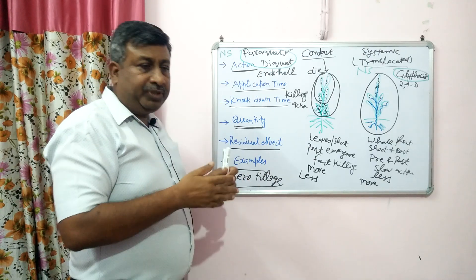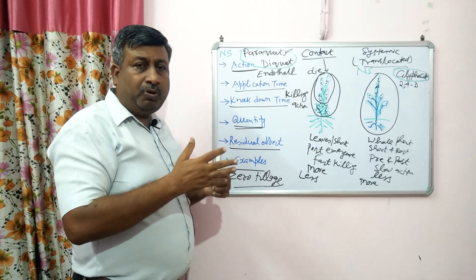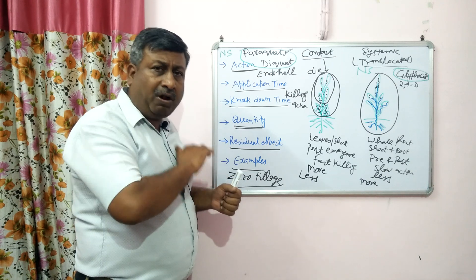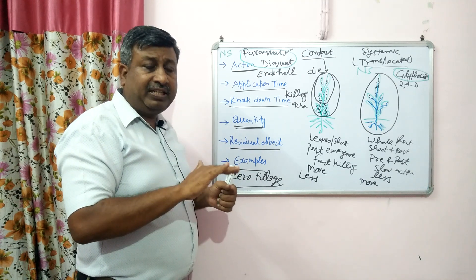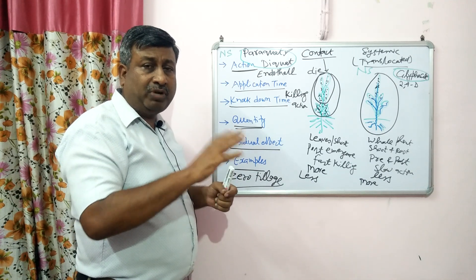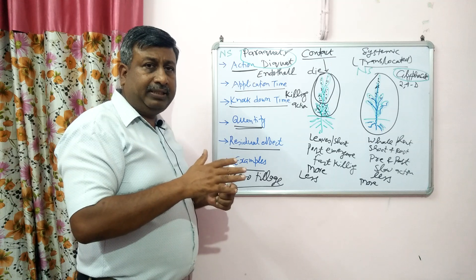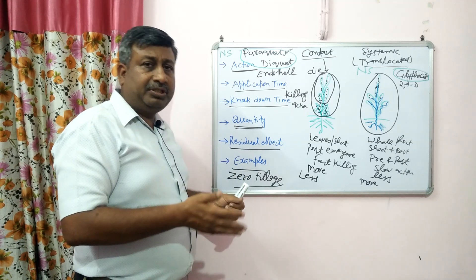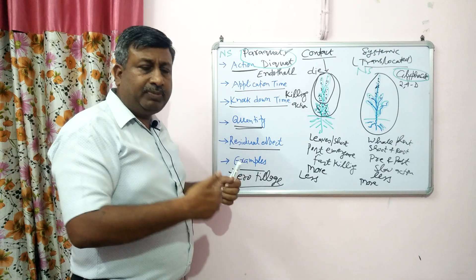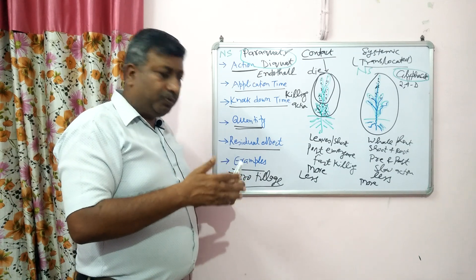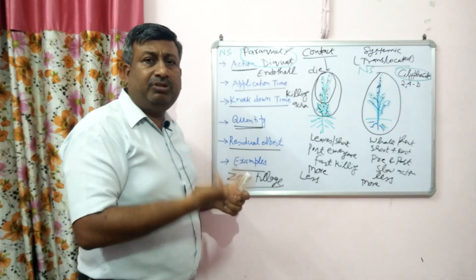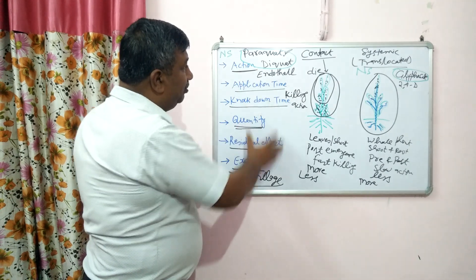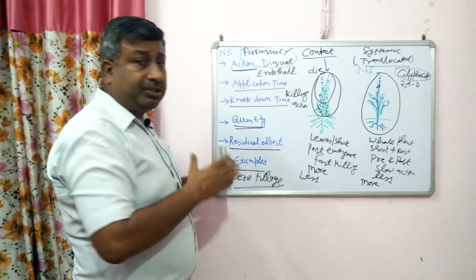In zero tillage, there is more weed problem, so paraquat is sprayed and it kills all the vegetation. Its residual effect is very less, so we can proceed with sowing soon after, and there is no effect on the crop. So if there are many weeds in a zero tillage system, paraquat is applied to kill weeds quickly without residual effect. This is why contact herbicides are commonly used in zero tillage systems.